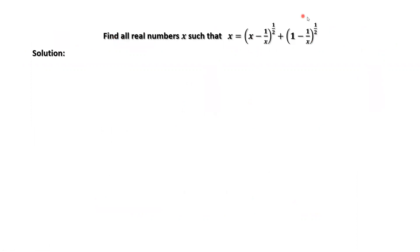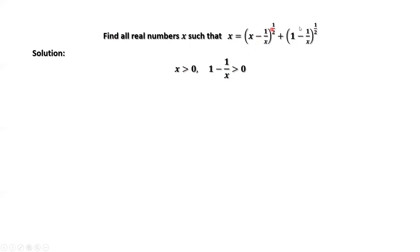From this given condition, we have x is bigger than 0, and 1 minus 1 over x is bigger than 0. Why? By definition, 1 over x means x cannot be 0. x is on the left-hand side, and the right-hand side is the sum of two square roots, so the right-hand side is bigger than or equal to 0. Because x is not 0, x is bigger than 0.